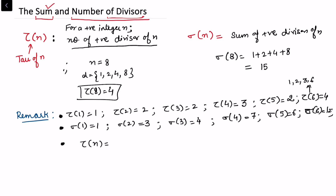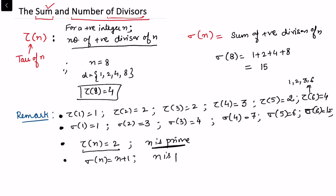From the above examples it is very clear that tau(n) is always 2 if n is prime, because a prime has only two divisors: 1 and n. Similarly, sigma(n) is always n+1 if n is prime, because 1 always divides every prime, so the sum is 1 + n = n+1.